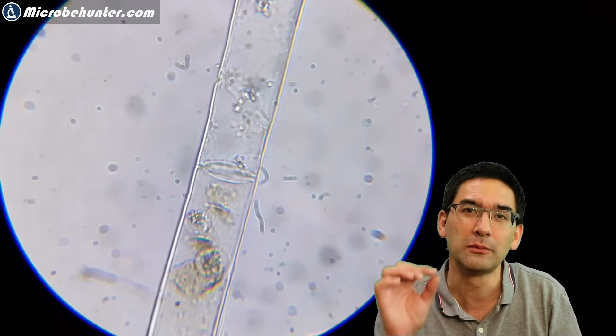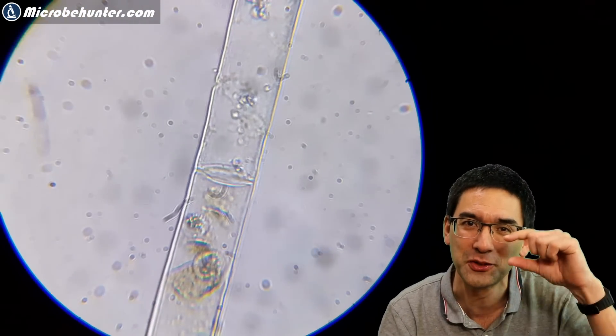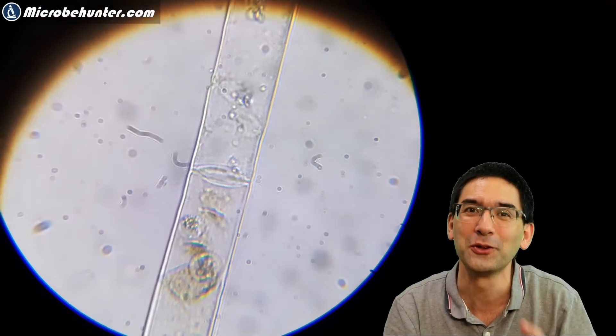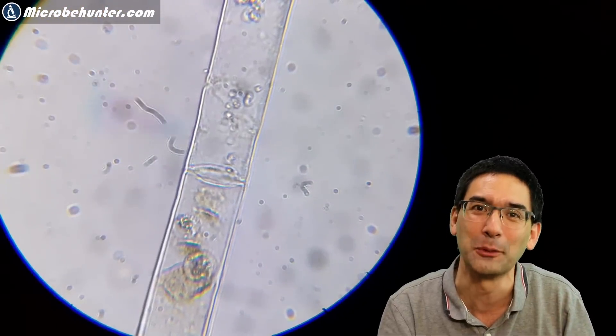Basically the dots that you see - that's all dirt on the eyepiece. So when I turn the eyepiece you can see all of the dirt also rotating around. That's not the fault of the microscope but my fault because I didn't clean it properly.